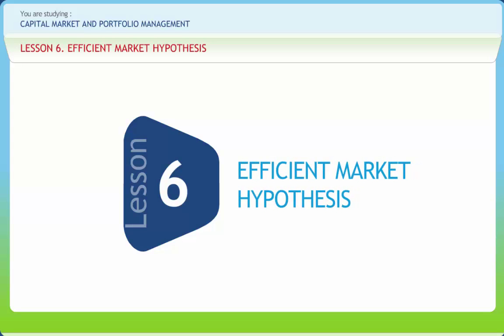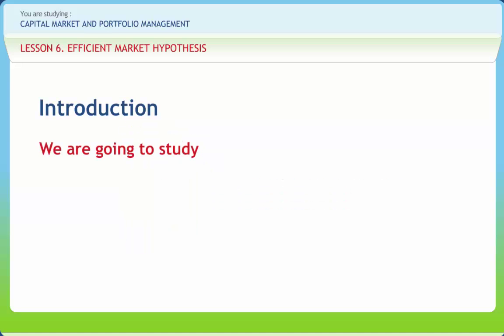Efficient market hypothesis. We all know that an efficient capital market is one in which security prices adjust rapidly to the arrival of new information, and therefore the current prices of securities reflect all information about the security.